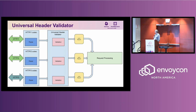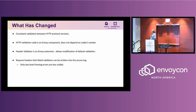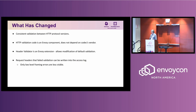Our answer to this is Universal Header Validator. In simple terms, we are taking that validation out of the codecs and moving it into one centralized component. As part of the Envoy codebase, Envoy now owns protocol validation. The first thing that's going to change is that we're going to get consistent validation across all protocol versions. It's now an Envoy component, so changes don't depend on codec vendors. We can make them runtime-flag-protected. It's much easier to understand now.